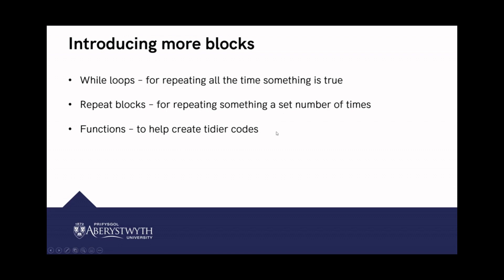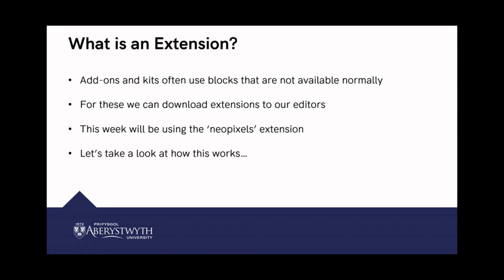Now we can move on and have a quick look at extensions. What is an extension? When it comes to the micro:bit, an extension is an extra set of blocks — add-ons for different sensors, different pieces of hardware, different bits of equipment, and the kits you can often buy that use blocks not normally available in your editor. We can download what are called extensions which will give us those blocks. This week the extension we'll be looking at is called NeoPixels. I'm going to show you how to get the extension and then do a little program to work through with you.